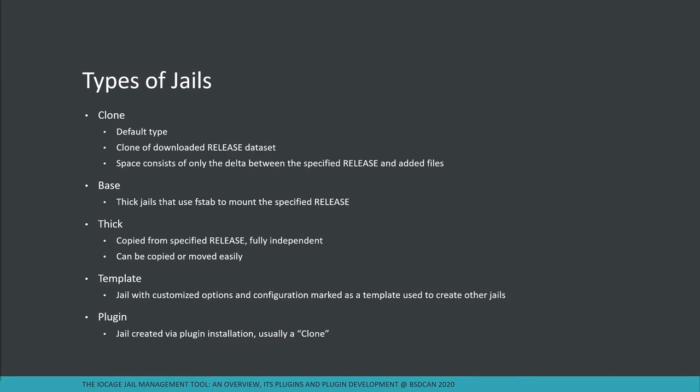Base jails are thick jails that use an fstab to mount a specified release. A thick jail is essentially copied from a specified release and is fully independent — useful if you want to copy or move them to another system or even import into a VM. Template jails let you create a jail with all desired options, settings, and file system changes, mark it as a template, and then create any other jails based on it. Finally there's the plugin jail, typically a clone with plugins installed.